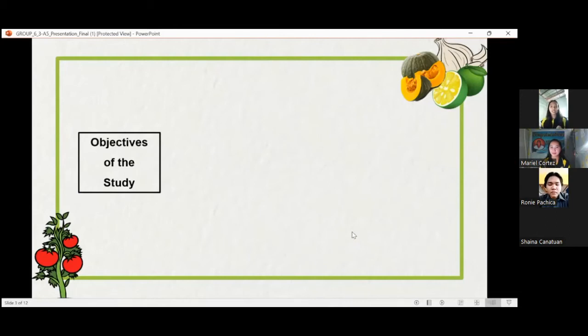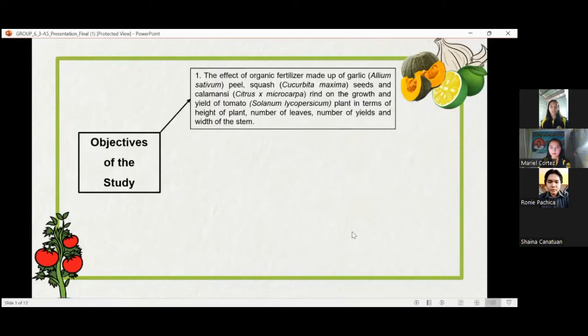Objectives of the study. This study aims to develop an affordable, environmentally-friendly organic fertilizer that will help the farmers in growing their crops and helping reduce food waste products, to evaluate the growth and yield of tomato Solanum Lycopersicum plant in terms of height of plant, number of leaves, number of fruits, and width of the stem.